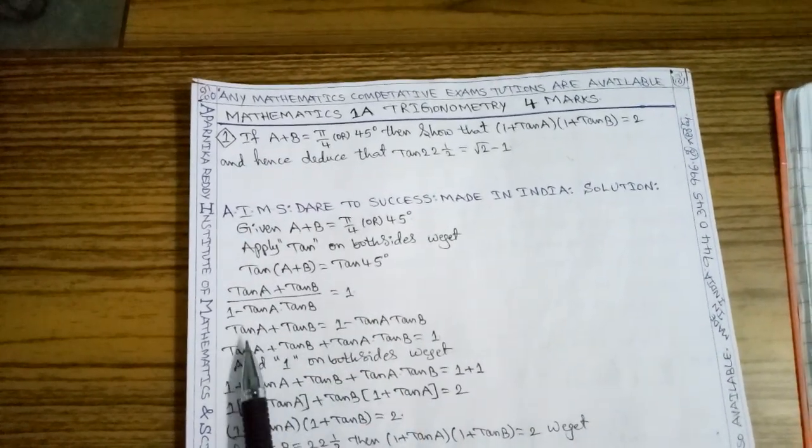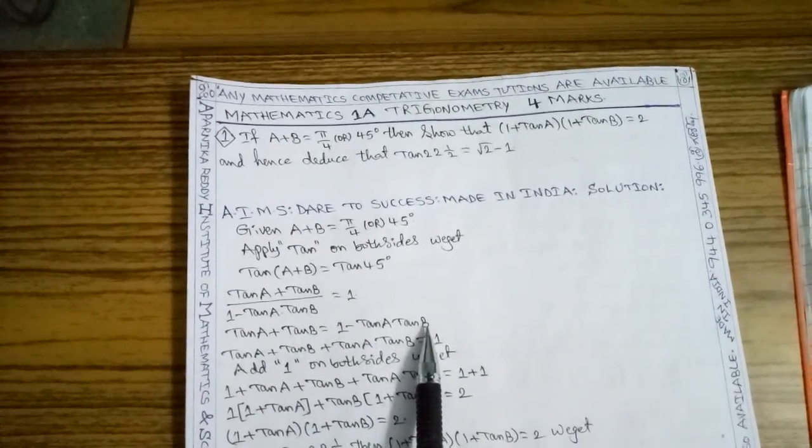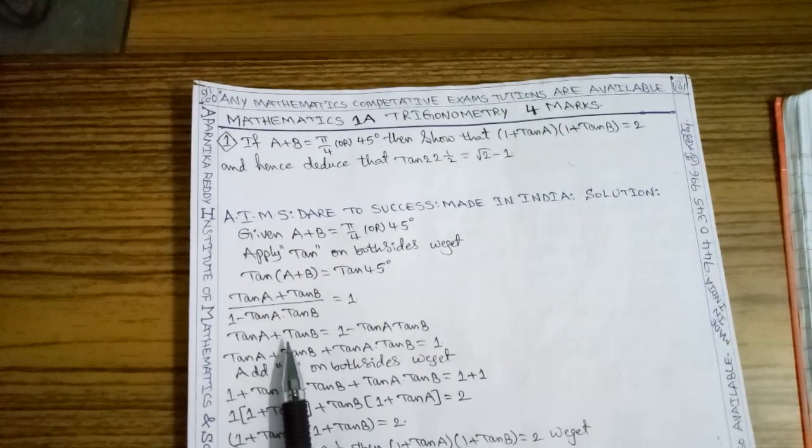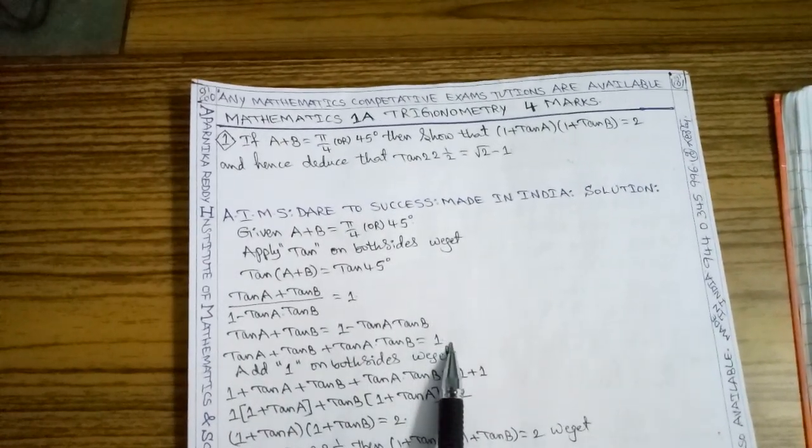Using cross multiplication, tan A plus tan B equals 1 minus tan A tan B. Moving minus tan A tan B to the left side gives tan A plus tan B plus tan A tan B equals 1.